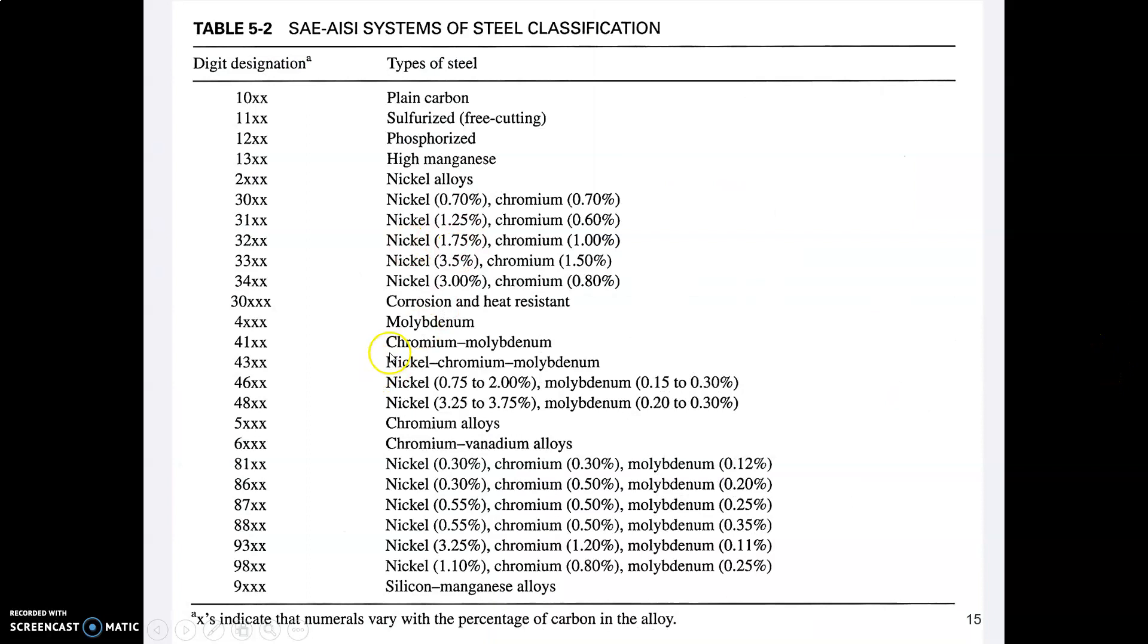Here's the list a little bit bigger. If the number starts with a 41, that means this is a chromium molybdenum steel. If it starts with a 5, that means it's a chromium steel, and so on and so forth. These materials listed here are the primary alloy after iron and carbon.